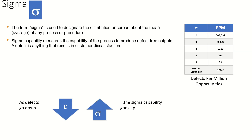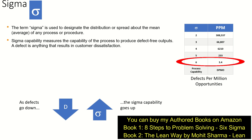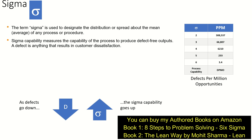Let's begin. Before we go ahead, we should understand what is Six Sigma. The term Sigma is used to designate the distribution or spread about the mean of any process or procedure. It is very important to understand it is a distribution around the mean which gives us the Sigma value. Sigma capability measures the capability of the process to produce defect-free output. A defect is anything that results in customer dissatisfaction. Looking at the table on the right-hand side, at Six Sigma we have only 3.4 defects per million opportunities, and at Five Sigma the DPMO value is 233. When we move from Two Sigma to Six Sigma, our error rate reduces exponentially — as defects go down, the Sigma capability goes up.